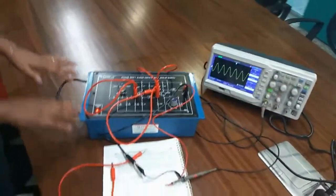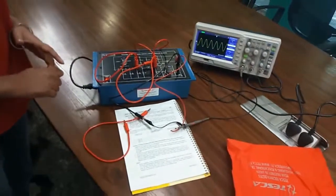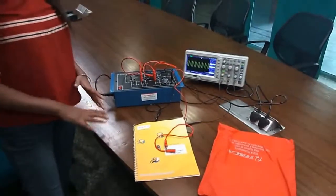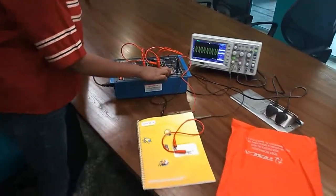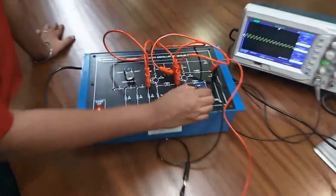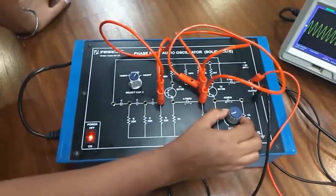So this is the phase shift audio oscillator using two transistors. To get the clean sine waveform, we need to adjust this switch. By adjusting this switch we will get a clean sine waveform.